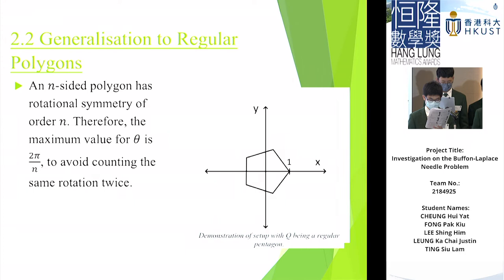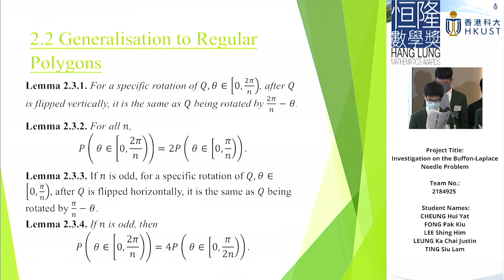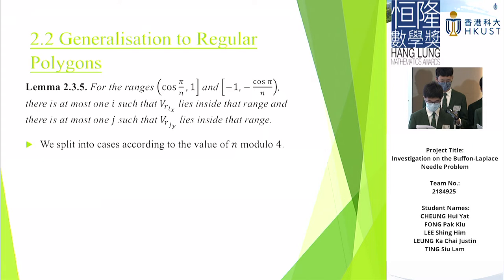And now, here is Lemma 2.3.2. For all n, we do not need to consider the whole range when calculating the probability. Instead, we only need to consider half of the range. It is because of symmetry. And if n is odd, we can even further reduce the range. So, we split into cases according to the value of n modulo 4.